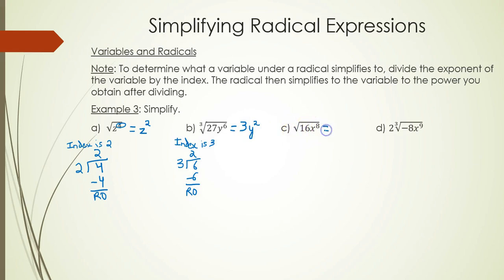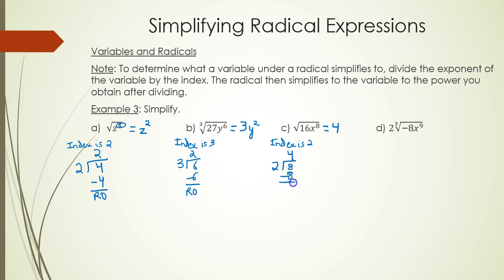Part C: square root, so the index is 2. The square root of 16 is 4. How many times does 2 go into 8? 4 times, with a remainder of 0. No x's will remain under the radical.